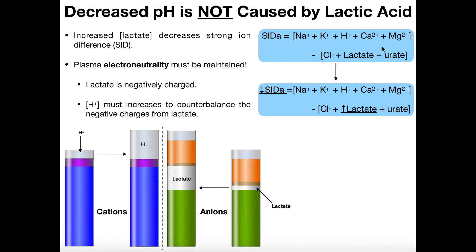The strong ion difference (SID apparent) is equal to the sum of the concentrations of all the cations minus the sum of the concentrations of the anions. So let's suppose we have a situation such as high-intensity exercise where the concentration of lactate builds up — we have an increased concentration of lactate. The term we'd be subtracting in this calculation would actually be greater, because we're increasing the amount of lactate. Presumably the amount of chloride and urate would remain constant. So if we're increasing the amount of lactate, then we're subtracting a larger number, and the strong ion difference is actually going to drop.